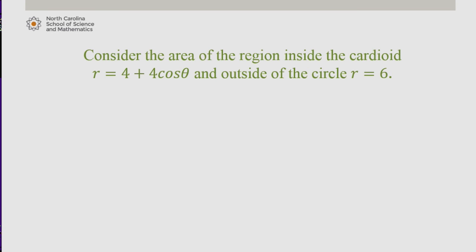Let's now consider the area of the region inside the cardioid r equals 4 plus 4 cosine theta, and outside the circle r equals 6. With these types of problems, we need to find where the two graphs intersect. One approach is to equate the two equations and solve for theta, but this won't always work, because while the curves may pass through the same points, they may not do so for the same theta values.